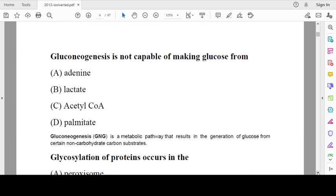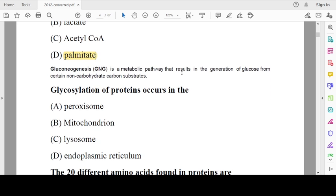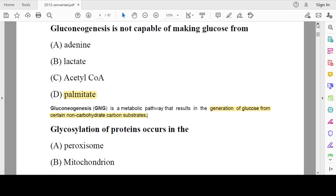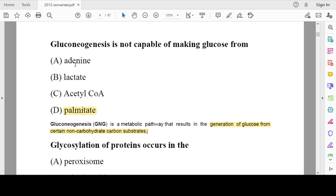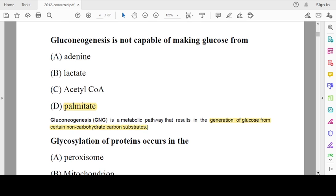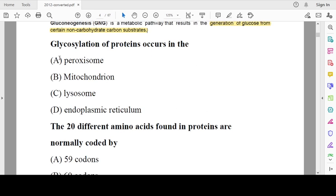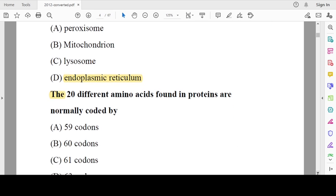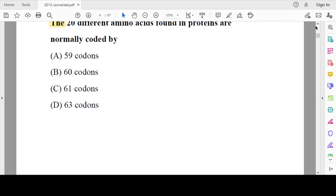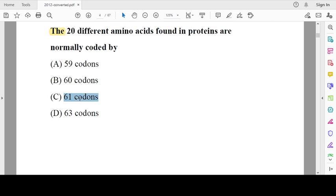Gluconeogenesis cannot capture making glucose from palmitate, which is a fatty substance. Gluconeogenesis is a metabolic pathway which results in generation of glucose from non-carbohydrate substances. Gluconeogenesis is capable of making glucose from alanine, lactate, and acetyl-CoA. Glycosylation of protein occurs in the endoplasmic reticulum. The 20 different amino acids found in protein are normally encoded by 61 codons.